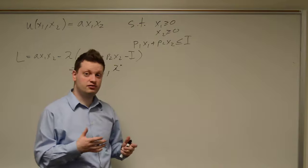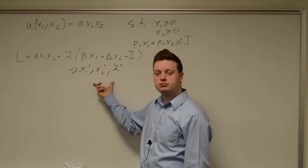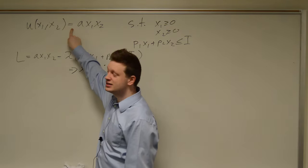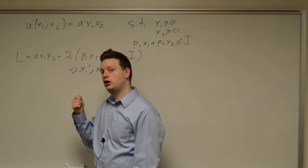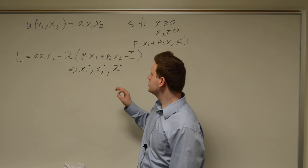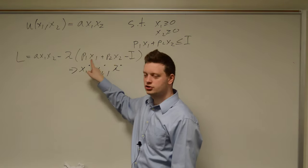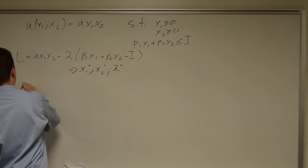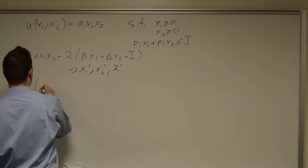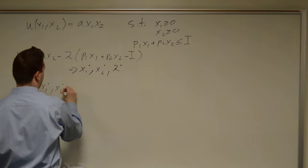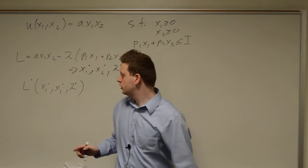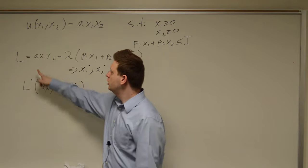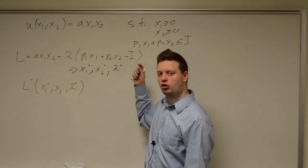Now that we have our optimal values, we can set up the maximum value function. Given that the Lagrangian takes the same value as the utility function for every x star and λ star (because at the optimum the constraint term is zero), these two functions are equal at the optimum. So our maximum value function is simply the Lagrangian evaluated at x1 star, x2 star, and λ star, and these optimal values depend on the parameters a, p1, p2, and i.